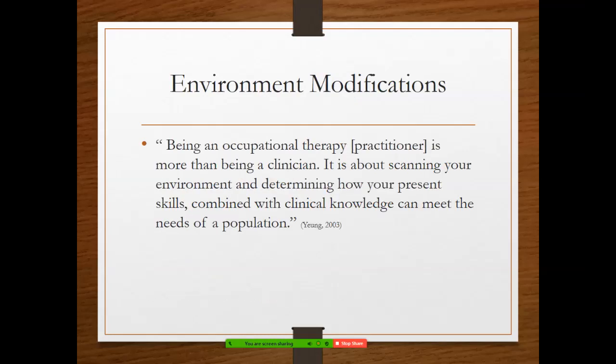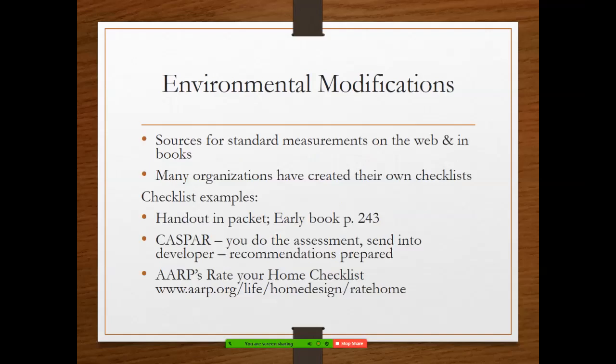Environmental modifications — being an OT practitioner is more than being a clinician. It's about scanning your environment and determining how your present skills combined with clinical knowledge can meet the needs of a population. There's that creativity mixed with clinical reasoning to give our patients the best outcomes. There are many sources for environmental modifications — on the web, in your books, and many organizations have created their own checklists. For example, there's CASPER — you do the assessment, send it to the developer, and recommendations are prepared. AARP also has a 'rate your home' checklist for home design.